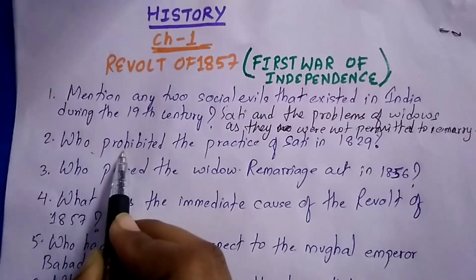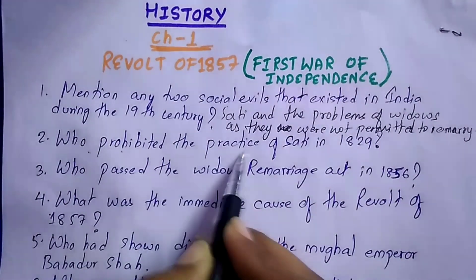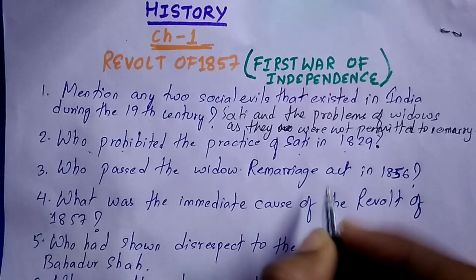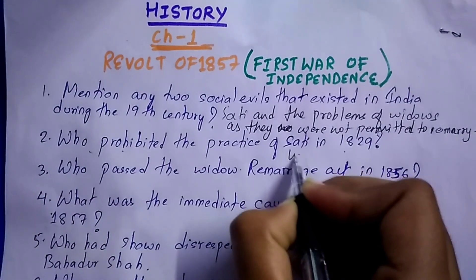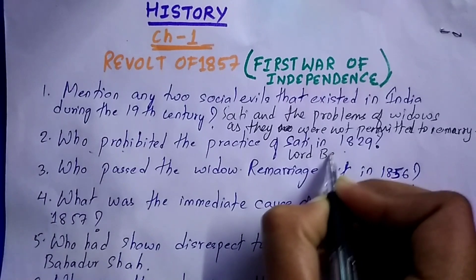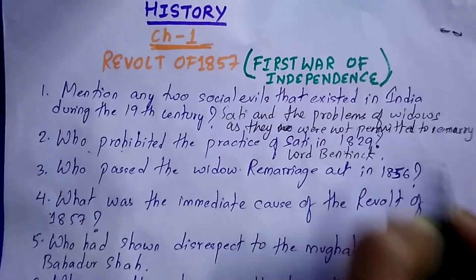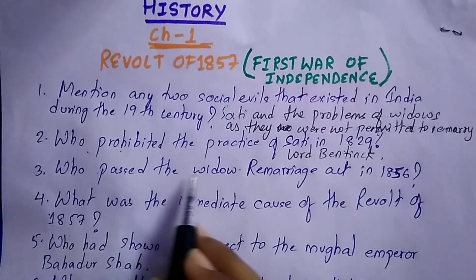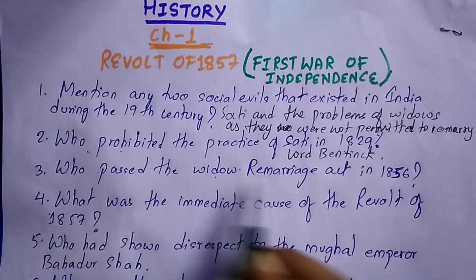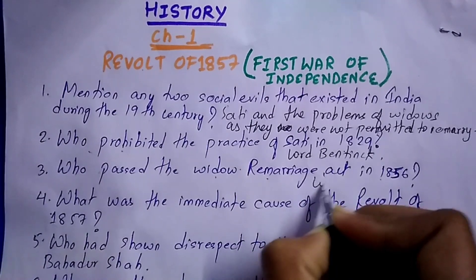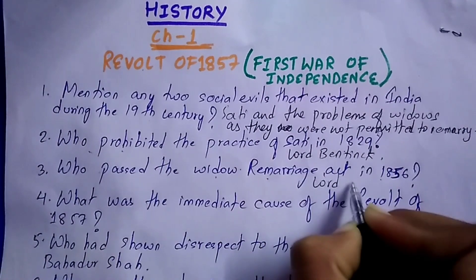Question two: Who prohibited the practice of sati in 1829? It is Lord Bentinck. Question three: Who passed the Widow Remarriage Act in 1856? It is Lord Canning who passed the Widow Remarriage Act in 1856.